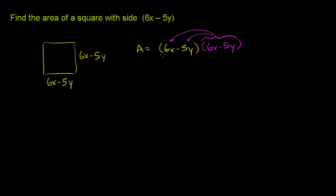And if we do that, we will get this 6x times this entire 6x minus 5y, so 6x times 6x minus 5y, and then we have minus 5y times, once again, the entire magenta, 6x minus 5y. And what does this give us?